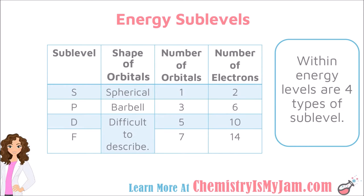Within those energy levels you have sublevels, and there are four different types: S, P, D, and F. These sublevels are where the orbitals are located, and those orbitals are where the electrons are located. So sublevels hold orbitals, and orbitals hold electrons. For each sublevel, you should be aware of the shape of its orbitals, the number of its orbitals, and the number of electrons that it can hold.